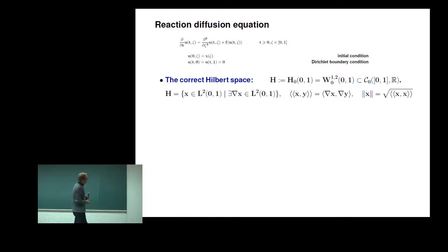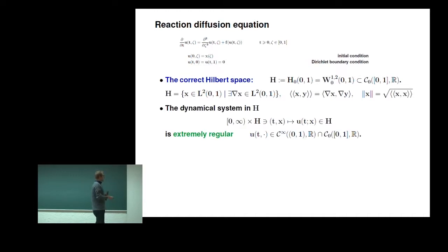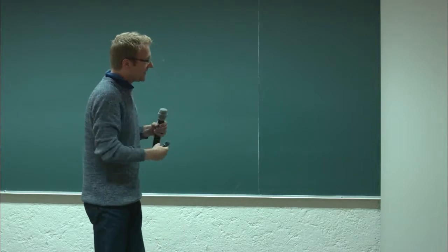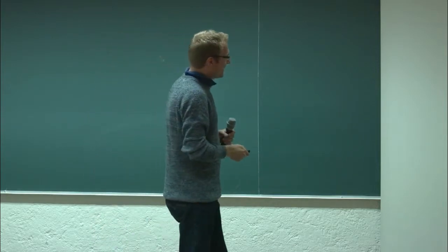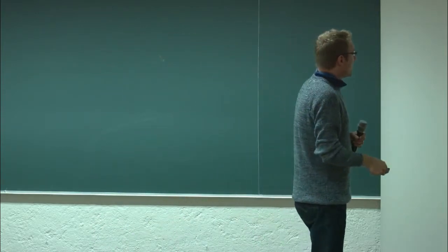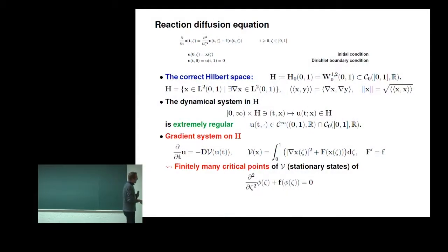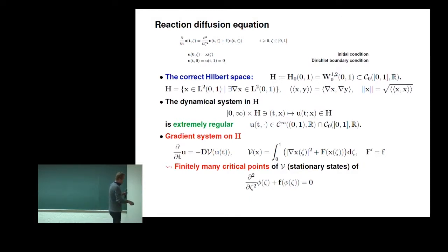We assume this is a gradient system, and F is assumed, in some sense, to be generic in order to have finitely many critical points, which are just the solutions of the stationary equation.